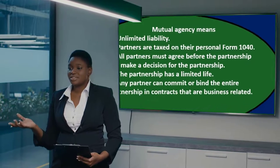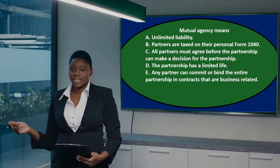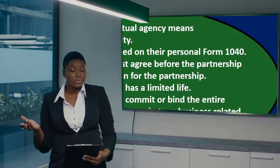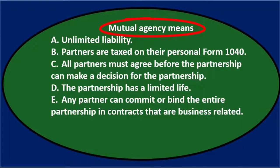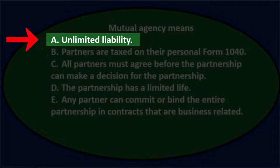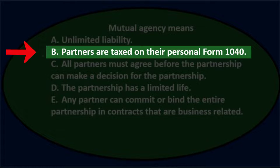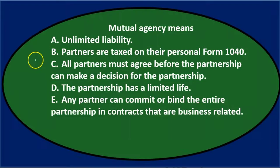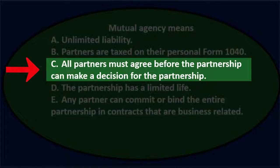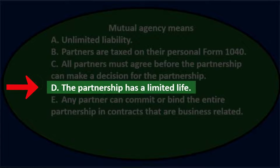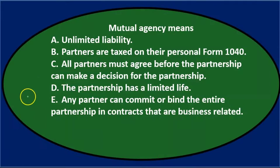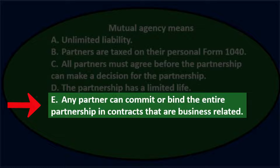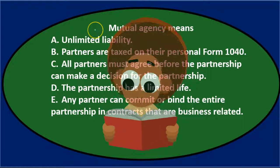In this presentation we'll take a look at multiple choice questions related to partnerships. First question: mutual agency means A) unlimited liability, B) partners are taxed on their personal form 1040, C) all partners must agree before the partnership can make a decision for the partnership, D) the partnership has a limited life, E) any partner can commit or bind the entire partnership in contracts that are business related.